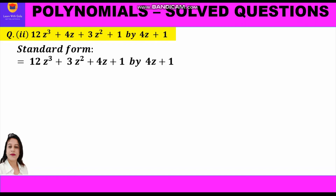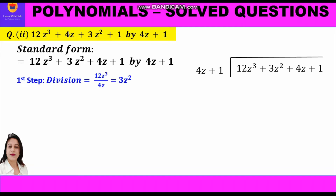This is to be divided by 4z plus 1. We set up the problem: 4z plus 1 comes outside and the dividend — 12z³ plus 3z² plus 4z plus 1 — goes inside. Now we shall start with the first step, that is division.